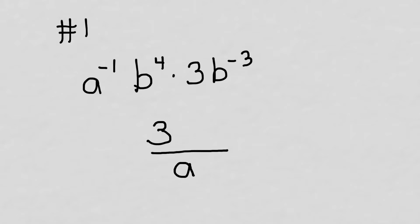That leaves two things to deal with: b to the fourth and b to the negative third. On all exponents, you add the exponent when you multiply. So b to the fourth times b to the negative third is going to be b to the first, which is just b. So that would be answer A for number one.